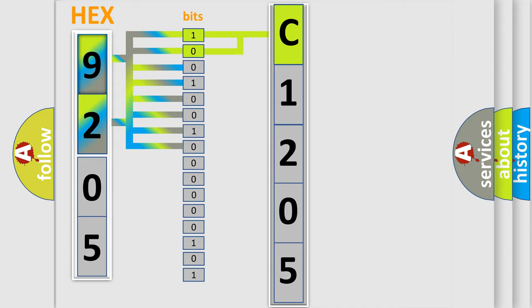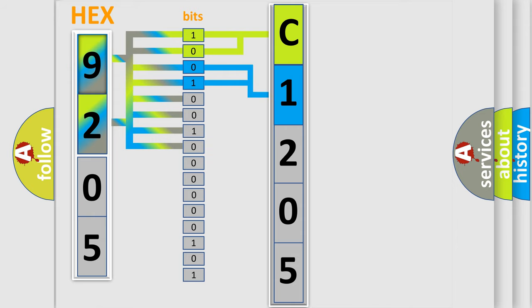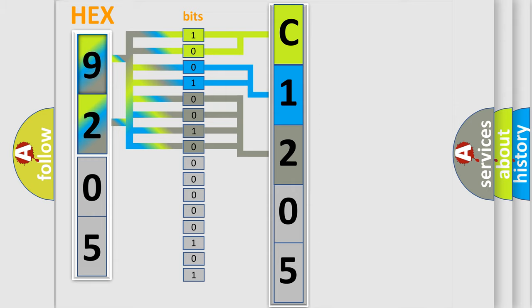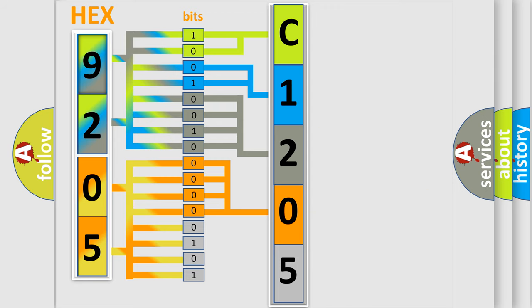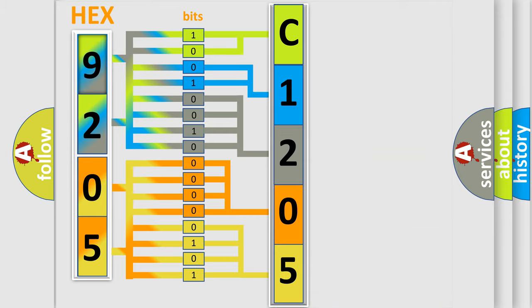The next two bits determine the second character. The last bits of the first byte define the third character of the code. The second byte is composed of a combination of eight bits. The first four bits determine the fourth character of the code, and the combination of the last four bits defines the fifth character. A single byte conceals 256 possible combinations.